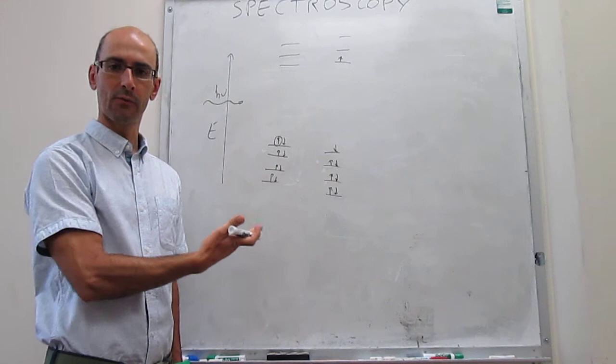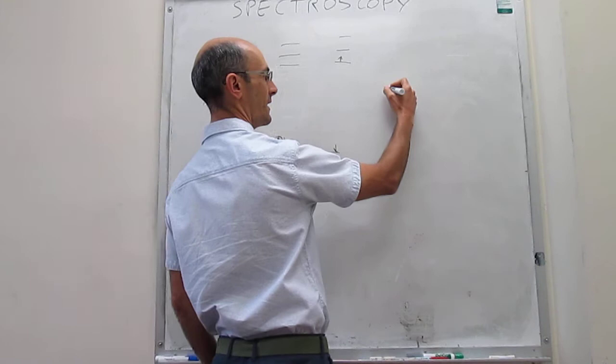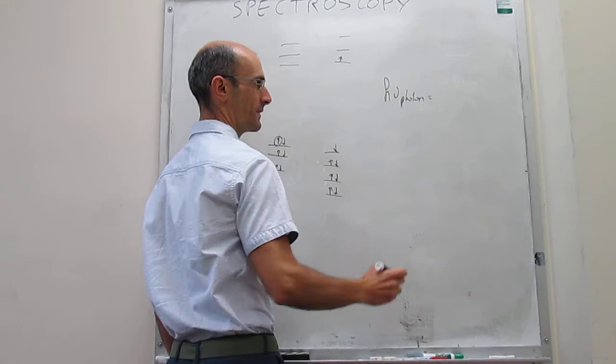Quantitatively, the spectroscopy can be treated as we have done with infrared spectroscopy. The energy of the photon hν needs to be identical to the difference in energy between the final state and the initial state.